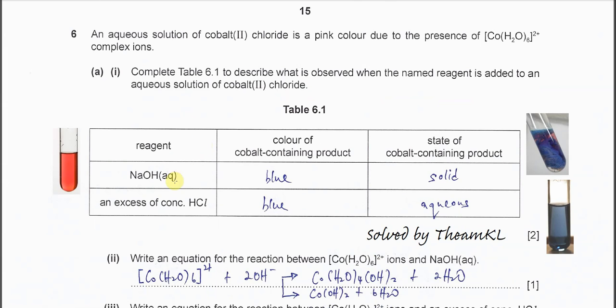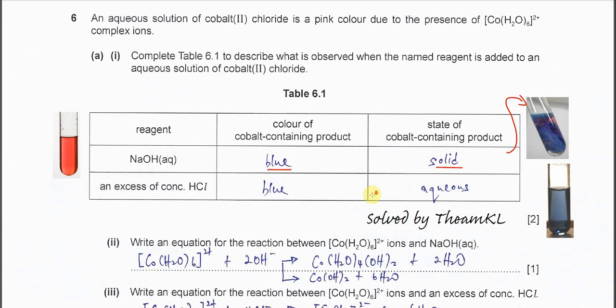The first reagent is sodium hydroxide solution. When it's added to this complex ion solution, you will see blue precipitate. So the color of cobalt-containing product is blue, and the state is solid because it's a blue precipitate.